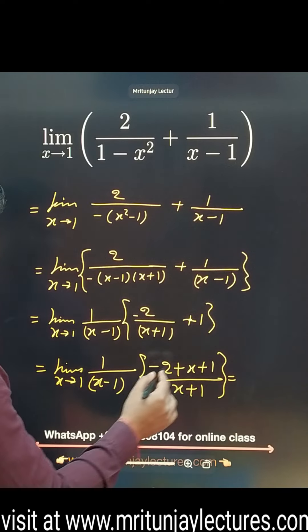We have x minus 1 upon x minus 1 into x plus 1. The x minus 1 terms cancel out. Put x equal to 1, then we get 1 plus 1, which is 2. So the answer is 1 by 2.